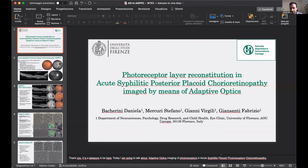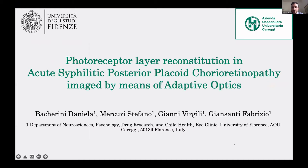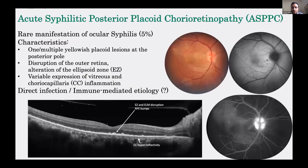Thank you. It is a pleasure to be here. Today I'm going to talk about adaptive optics imaging of photoreceptors in acute syphilitic posterior placoid chorioretinopathy — ASPPC. This is a rare manifestation of ocular syphilis characterized by one or more placoid lesions at the posterior pole, together with disruption of the ellipsoid zone, presence of RPE elevation, and various degrees of vitreous and choroidal inflammation. It is usually characterized by complete recovery of OCT structures after treatment with penicillin.